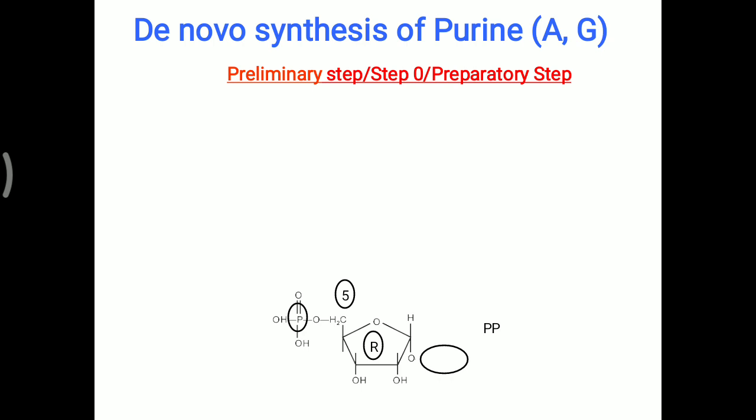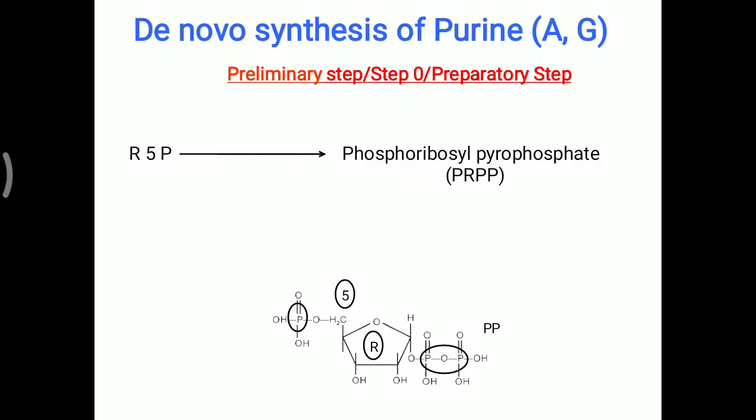Ribose 5-phosphate has a phosphate molecule attached over the 5th carbon of the ribose sugar. A pyrophosphate molecule is then added, making PRPP (phosphoribosyl pyrophosphate). The 2-phosphate is donated from an ATP molecule via the enzyme PRPP synthetase. ATP donates 2-phosphate and is converted into AMP, completing the preparatory step for de-novo purine synthesis.